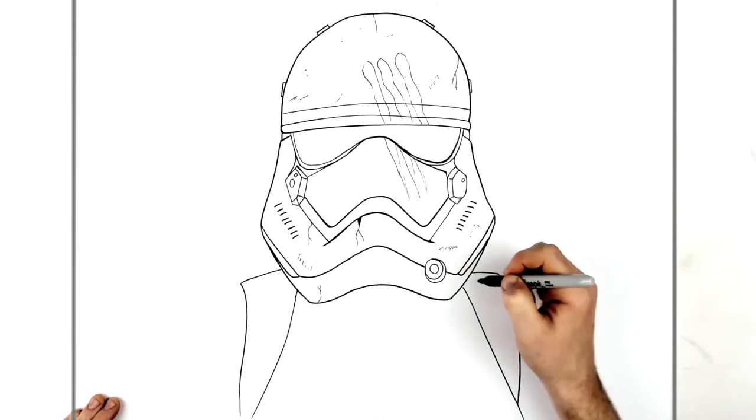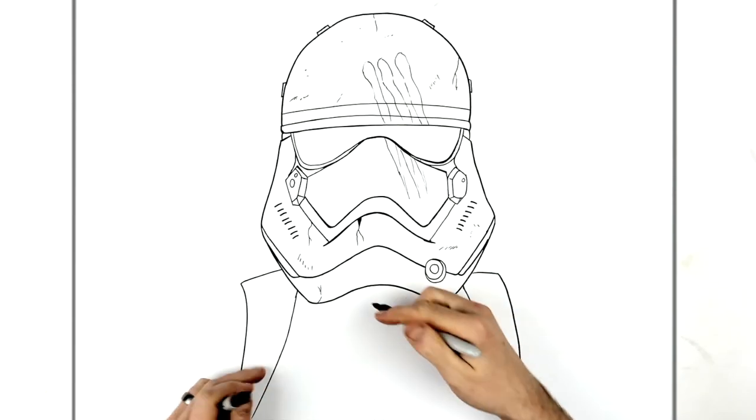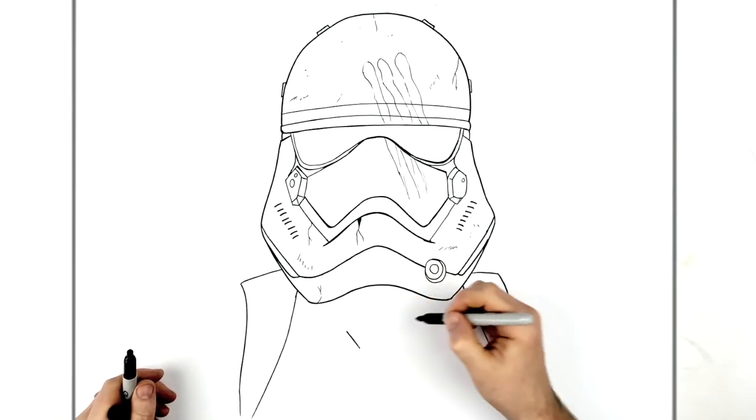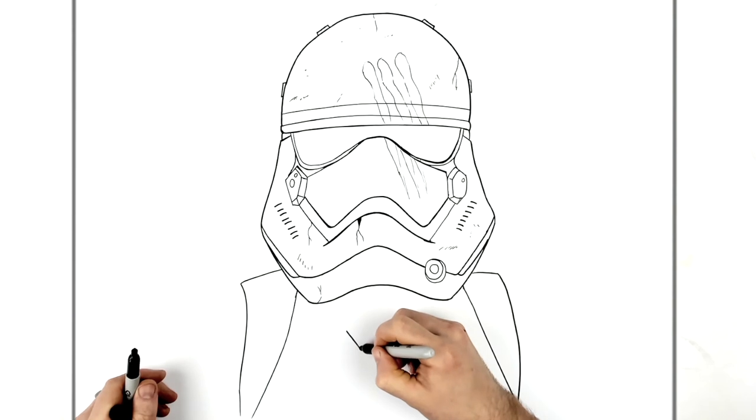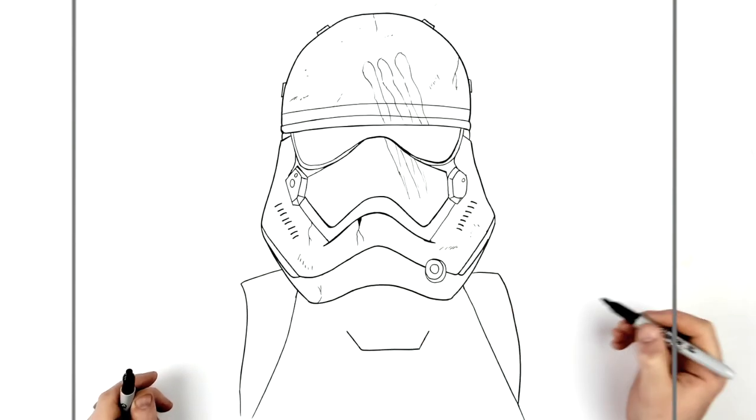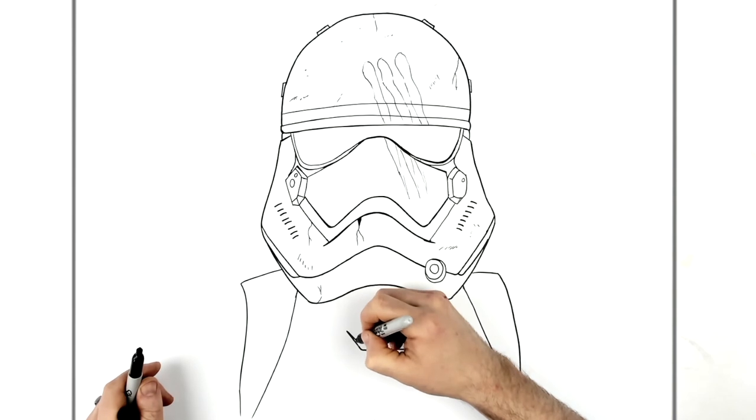And then another line for the armor here, going down that way. And then he has a vent here in the middle, so this comes down and then across.